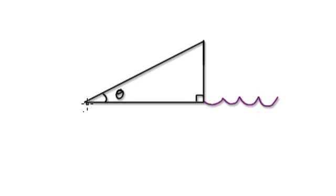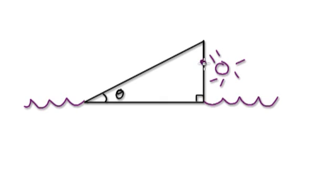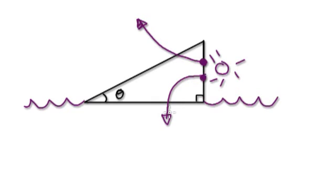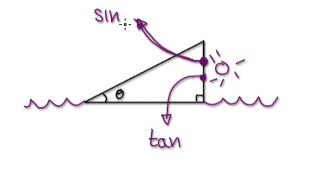Imagine you're on a beach. This is the sea here, and the sun is here. The sun has two rays coming out of it. One ray goes upward — you see a sign to heaven. The other ray shines down on you lying on the beach, so you're going to get a sun tan. I know it sounds weird, but just bear with me.